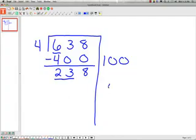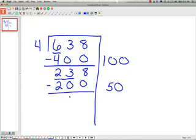5 times. So I put a 5 out here. 5 times 4 is 20. And I have to fill in a 0 over here. So I have to fill a 0 in here. And then I subtract. 38.